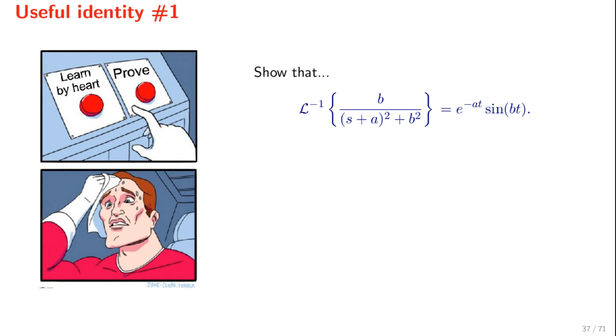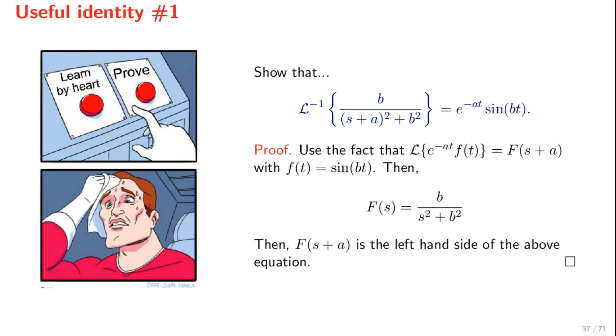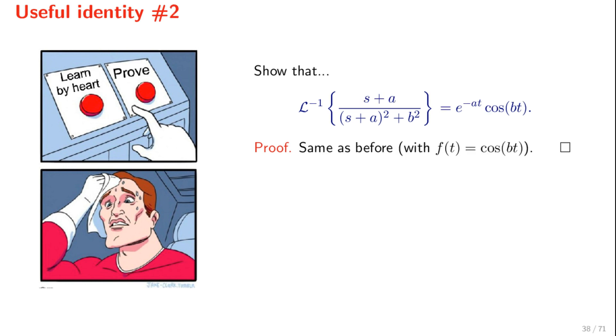But here, on the right-hand side, we have an exponential times a sine function. To multiply a time-domain function by the exponential of minus a t is to translate its Laplace transform by a. This is the well-known identity that the Laplace transform of exponential of minus a t times f is the Laplace transform f uppercase evaluated at s plus a. In our case, f of t is the sine of b times t, which has the Laplace transform b over s squared plus b squared.